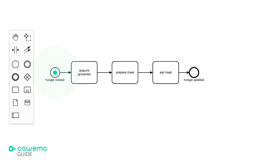This is also where a token is born. It then follows the sequence flow to our first task — the Acquire Groceries task. The token waits until the user has completed the task and then moves along. After the user has eaten the meal, our token moves to the end event and gets consumed. A process is only accomplished once all tokens have been consumed.